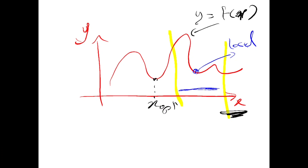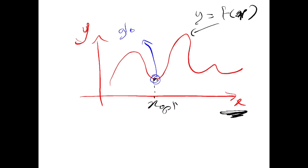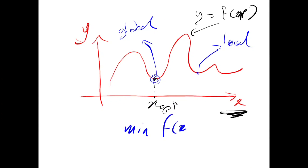In the case that we are looking for the global solution, that means the best point that you can get by covering all solutions. So we distinguish between the global optimal point and the local optimal point. And if we are looking for the optimal point without any constraint on x, that is the unconstrained problem — just minimize f(x) by changing x.